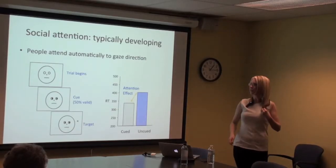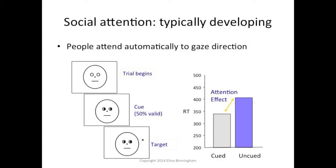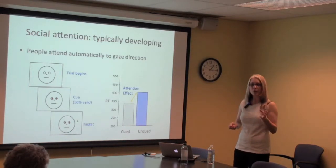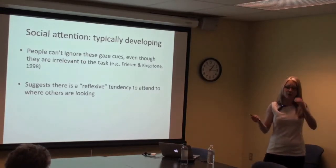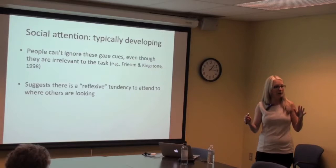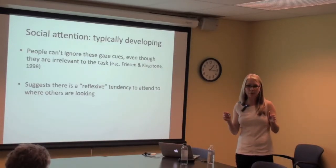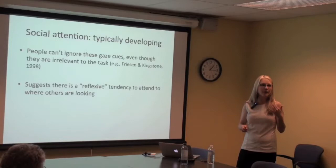What people have found using this paradigm across a variety of ages in typical development is that people are faster to detect the target when it was previously looked at by the face — cued reaction times are faster than uncued reaction times. This indexes that attention was oriented in response to where those eyes were looking, facilitating target detection. Importantly, the face's direction of gaze is non-predictive — it's completely random with respect to where the target appears.